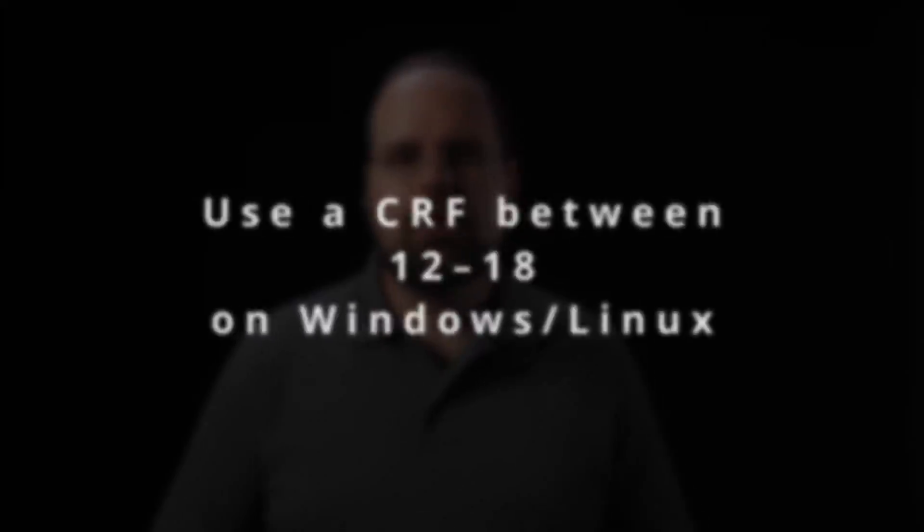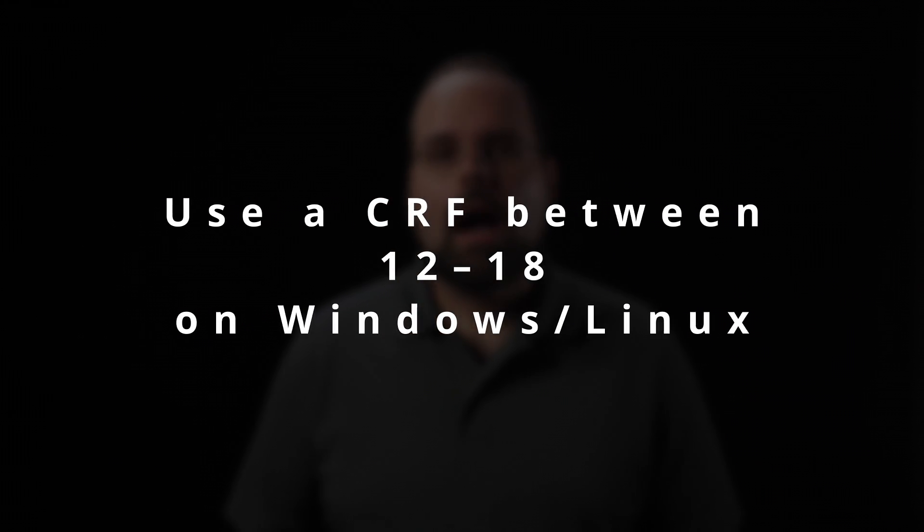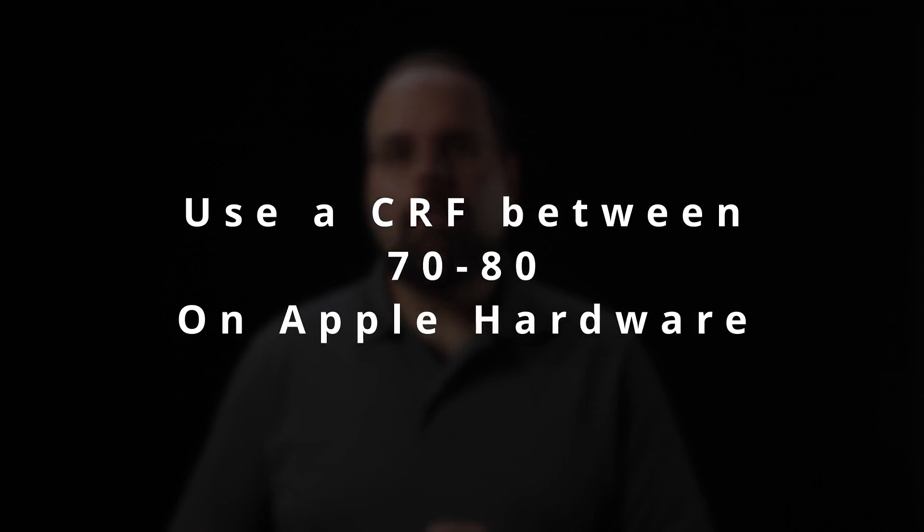What CRF should you use? If you Google this, you'll find a lot of people talking about using values in the 18 to 20 range. However, most of those people aren't working with intermediate or master-level files for video production. Typically I use CRF values between 12 and 18, usually 14 or 16 on my non-Macs, and around 70 or 80 on my Mac when using the hardware encoder.